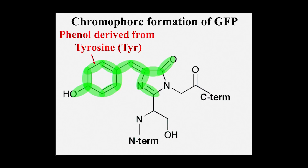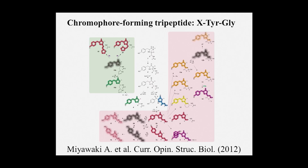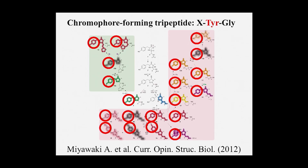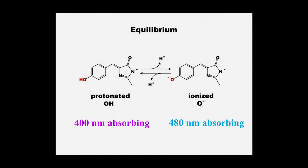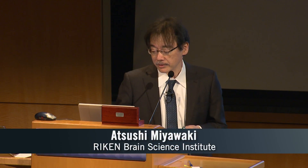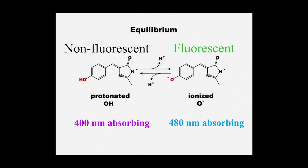Back to the GFP chromophore: it has a phenol ring, which comes from the tyrosine residue. Almost all fluorescent proteins now available have phenol rings in their chromophores. Exceptions are CFP and BFP, which have an indole ring or imidazole ring coming from tryptophan and histidine. The phenol ring-containing chromophore is most common. There is an equilibrium between the protonated and ionized state of the phenol hydroxyl group, absorbing at 400 and 480 nanometers. In many cases, the ionized form is fluorescent, so GFP basically has a bimodal absorption spectrum.